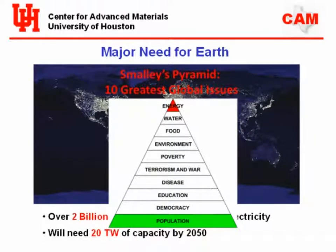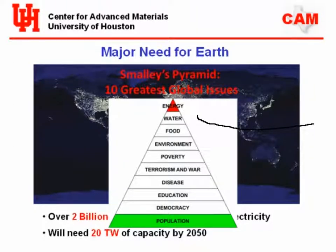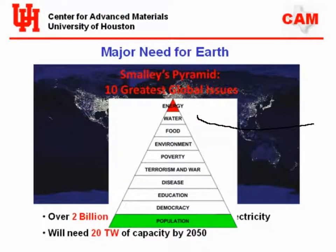What you see is the standard NASA map of the world at night. There are many areas in that map that have no light — they're dark. About 2 billion people in the world don't have electricity today. So we have to do something about changing that. The projection is by 2050, if you want all of the world to have a minimum of about 1 kilowatt equivalent — we're running at about 5.5 to 6 kilowatts per person in the U.S. right now — we need about 20 terawatts total capacity.